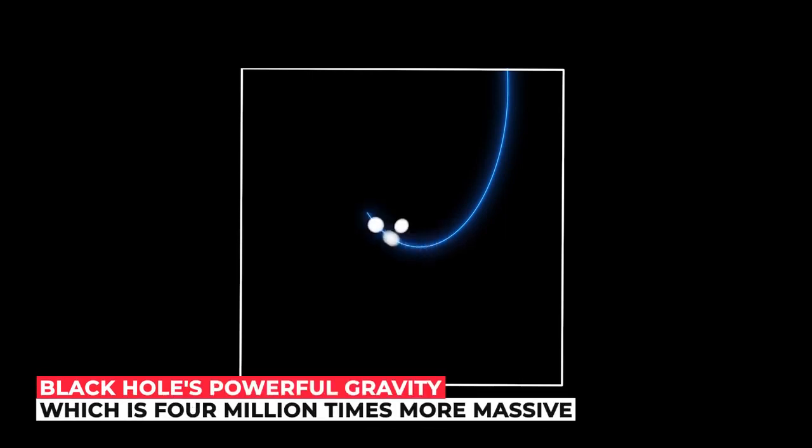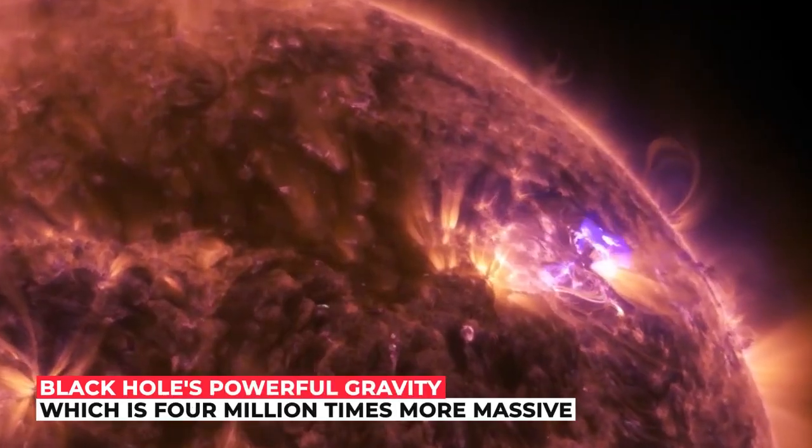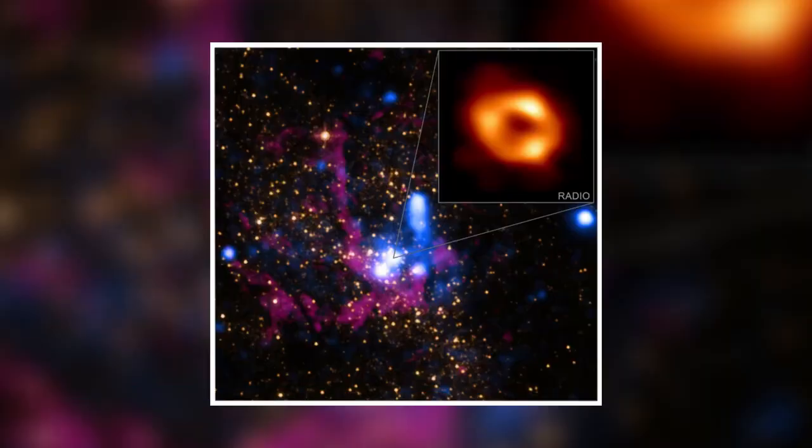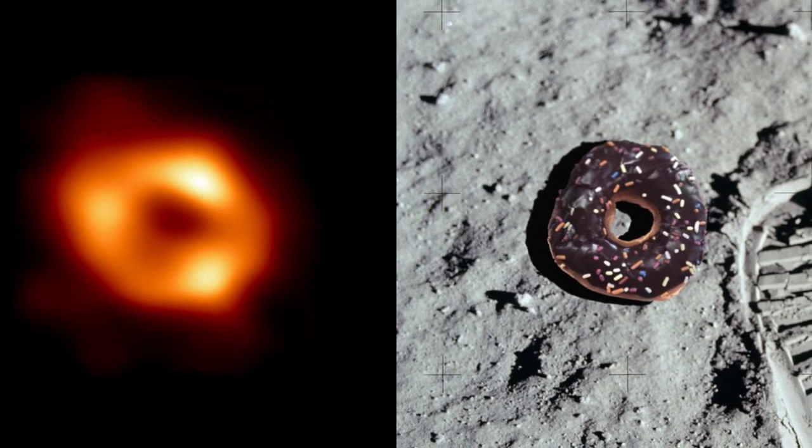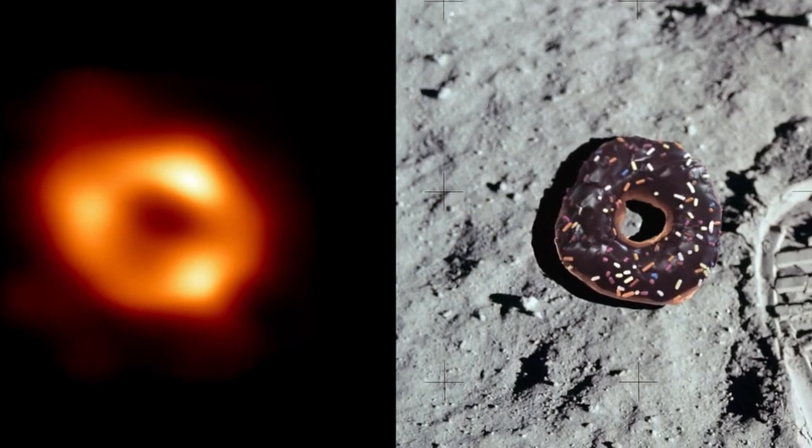Also, the new view captures light bent by the black hole's powerful gravity, which is 4 million times more massive than our sun. Because the black hole is around 27,000 light-years away from the Earth, it appears to us to be about the size of a donut on the moon in the sky.